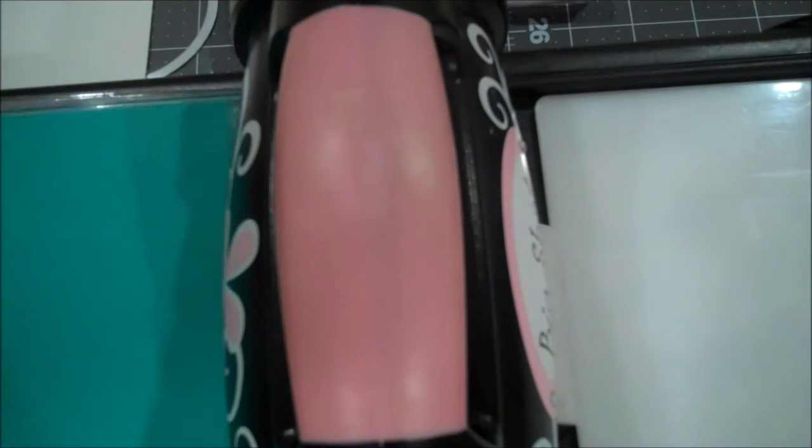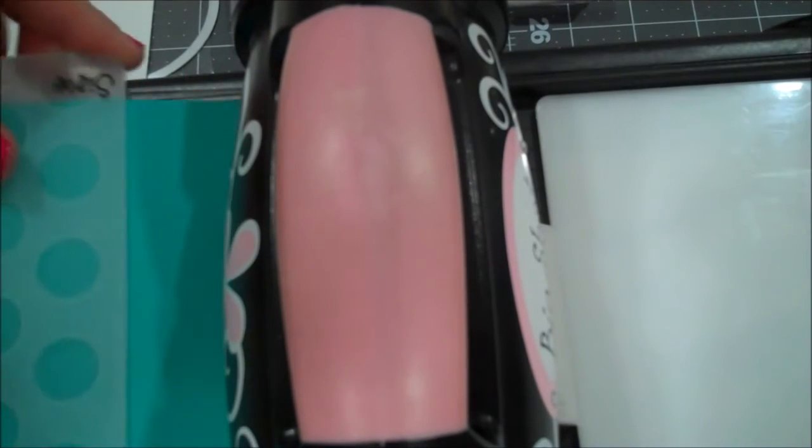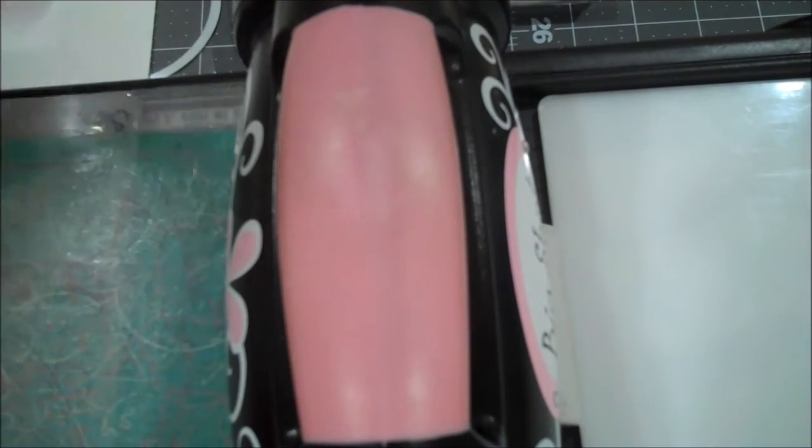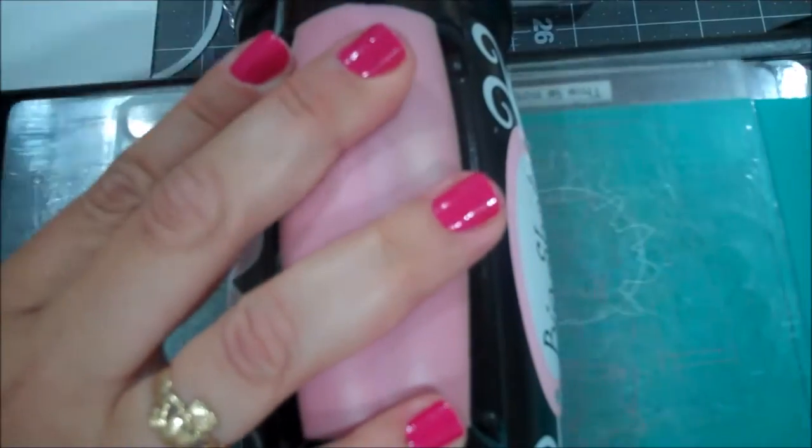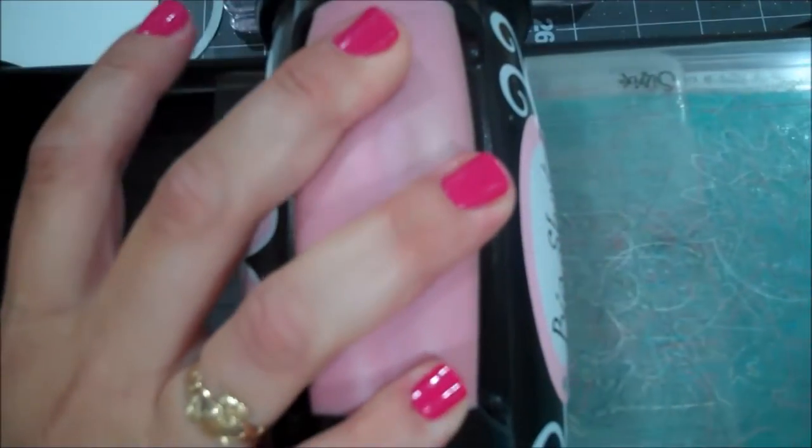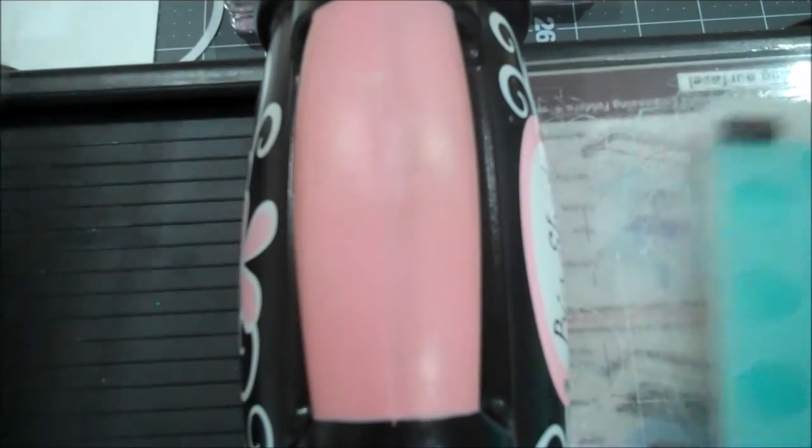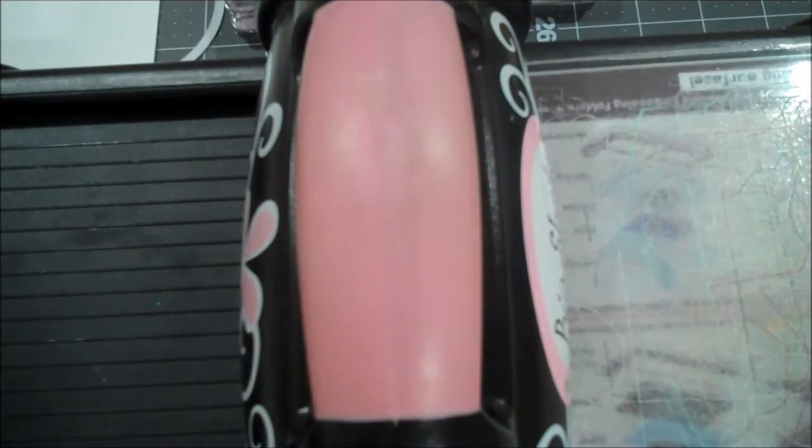I'm going to put one of my cutting pads in as well as my piece of Bermuda Bay with the embossing folder. My other cutting pad and I'm going to roll this through. And now you'll be able to see that we have embossed that.